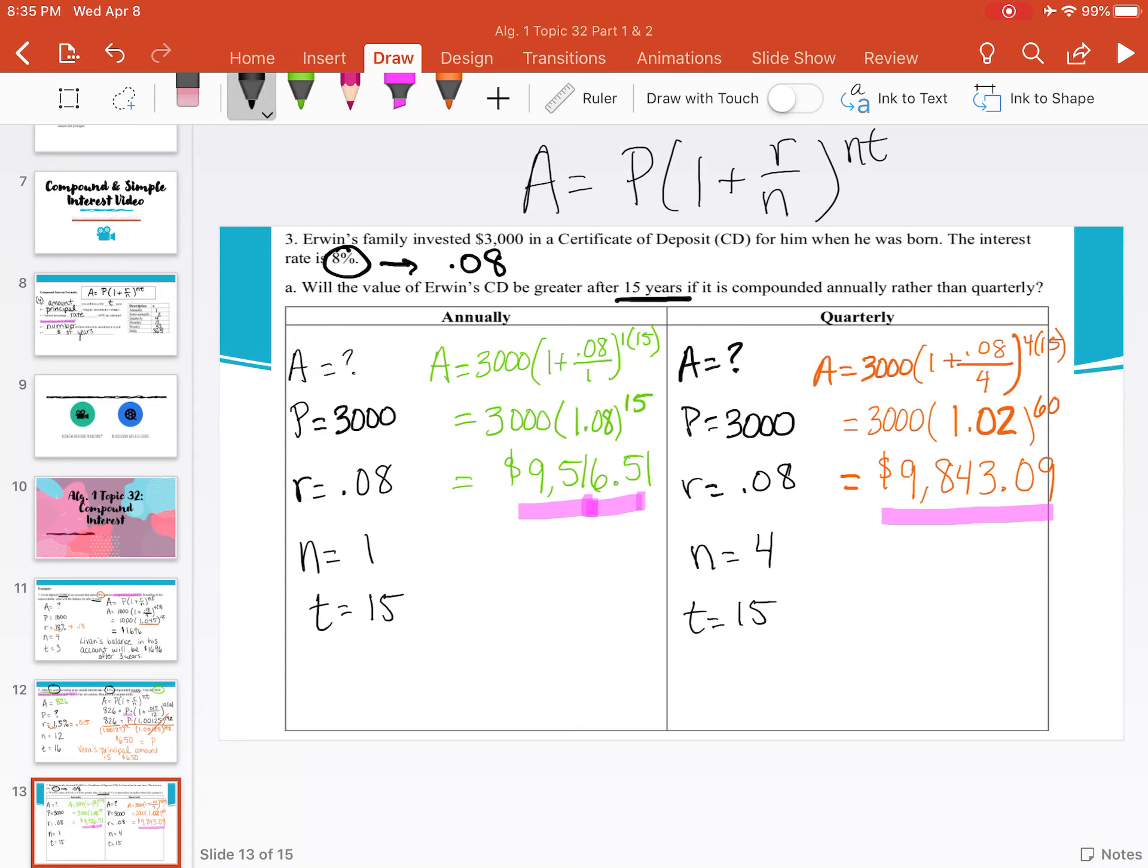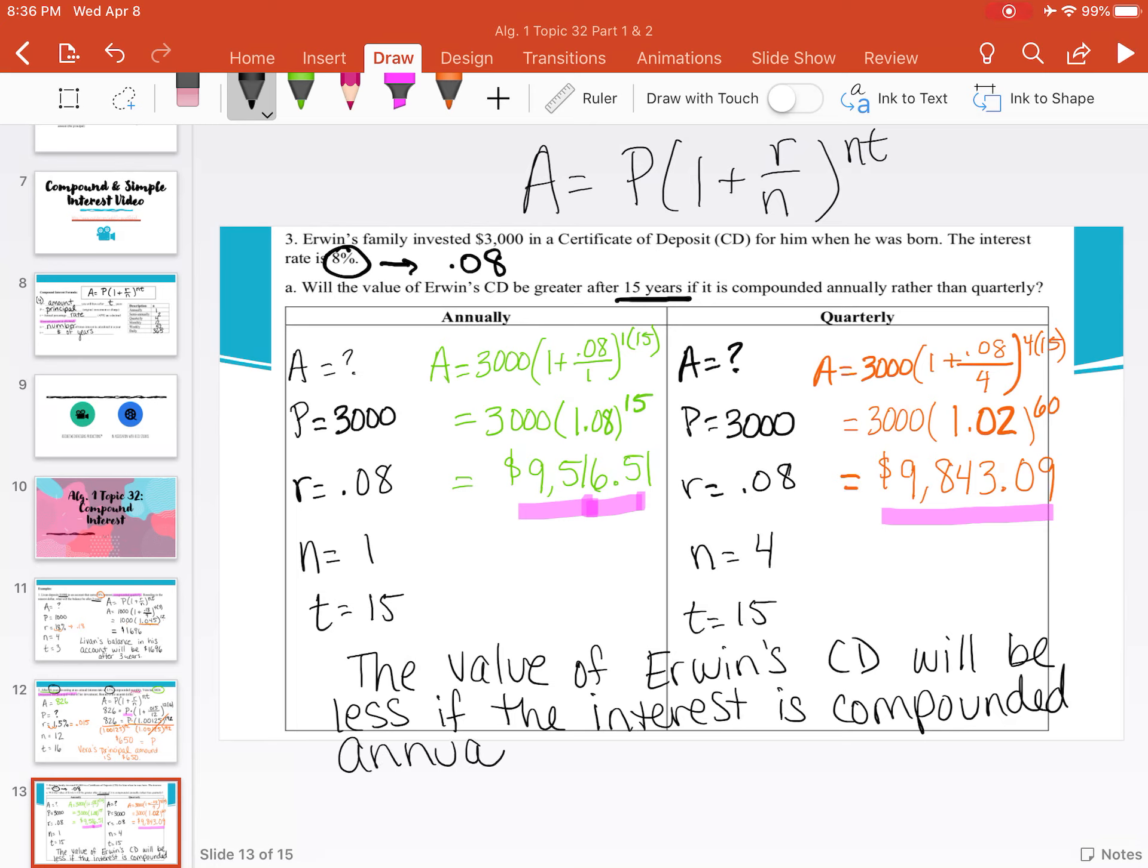So then we can write our conclusion sentence. The value of Irwin's CD or certificate of deposit will be less if the interest is compounded annually rather than quarterly.